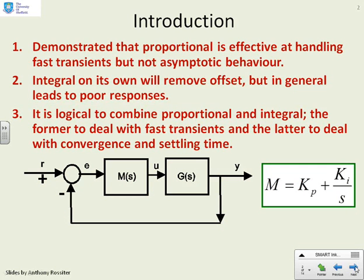Consequently, it's logical to combine the proportional and integral together. The proportional to deal with fast transients, and the integral to deal with convergence and settling time. And this will give us a compensator like this.